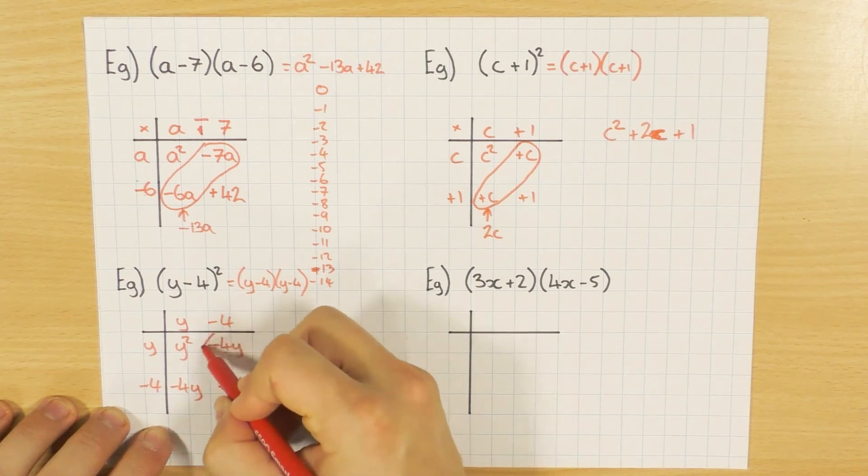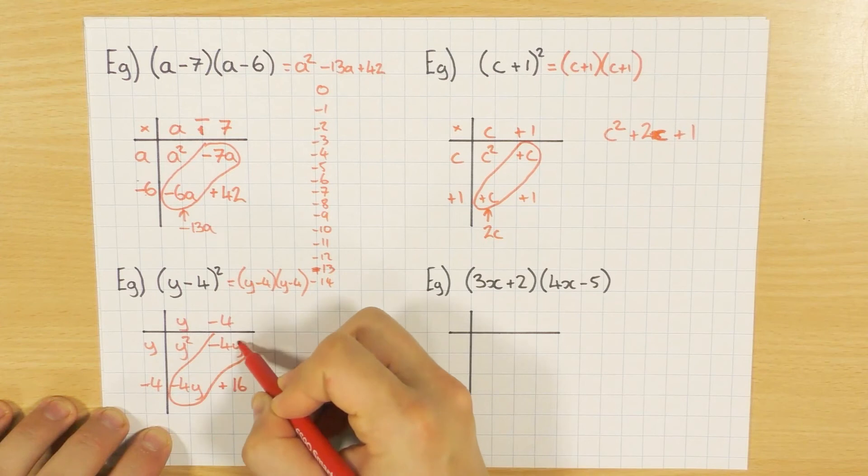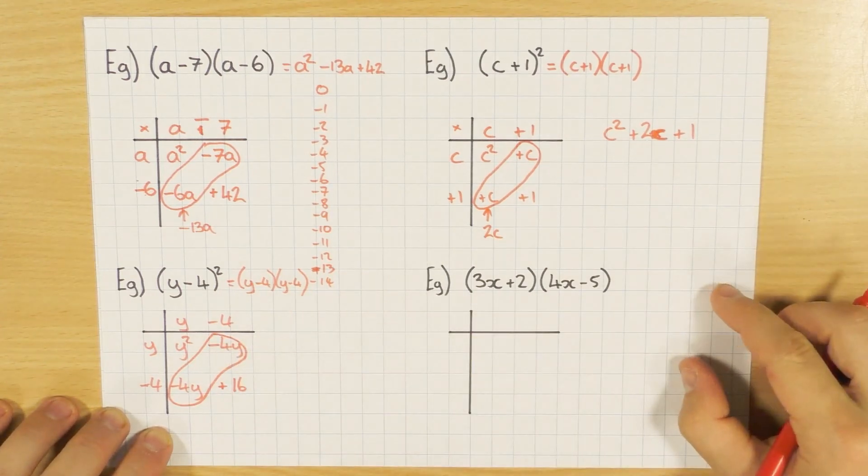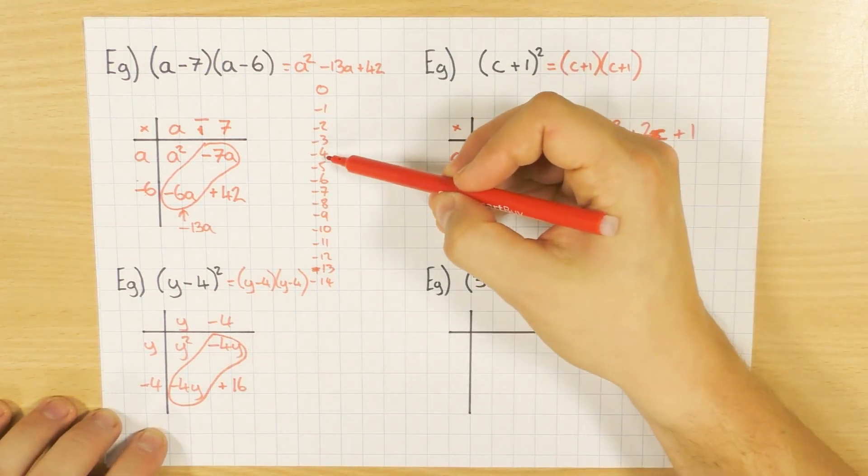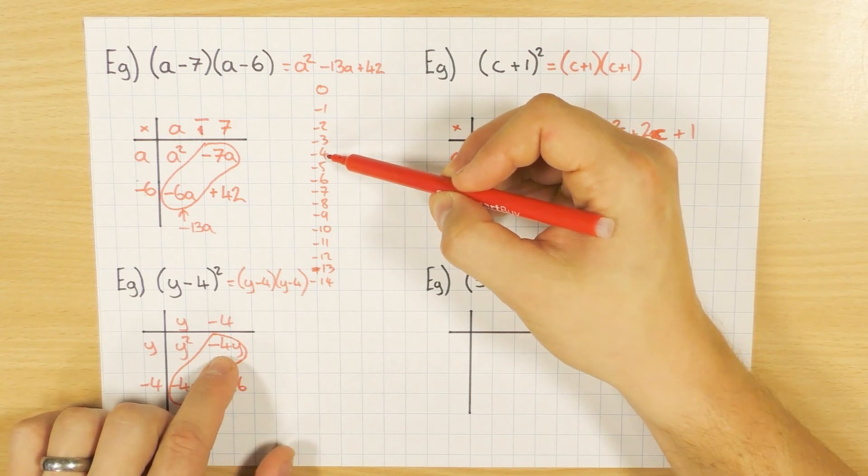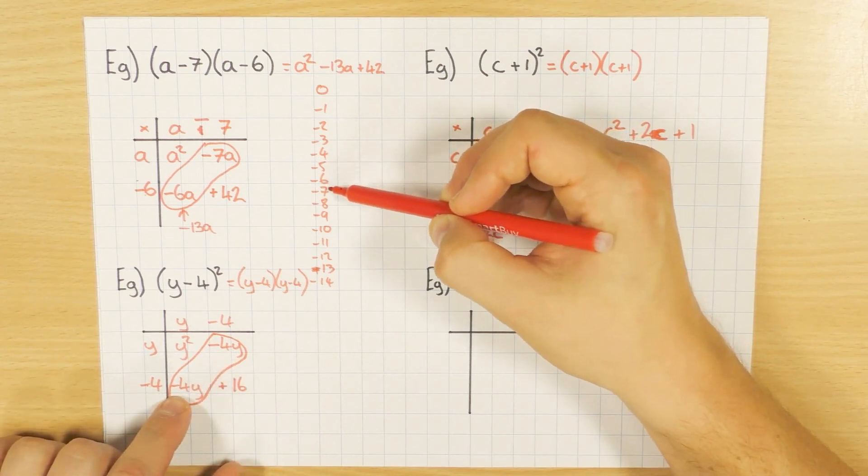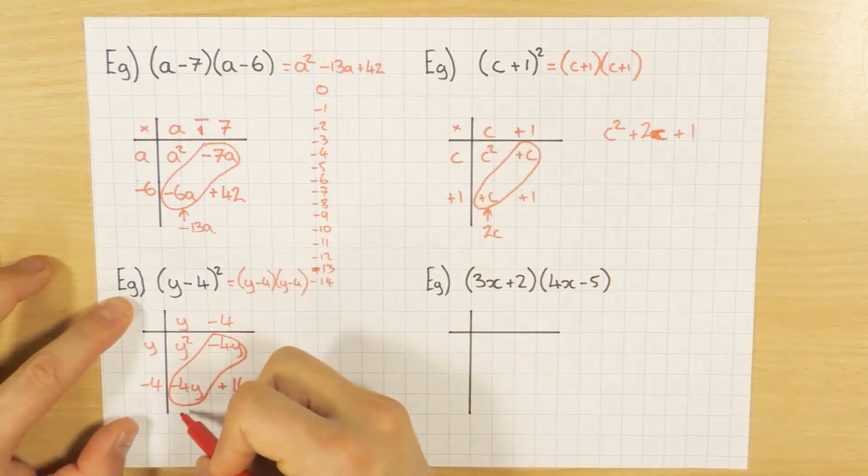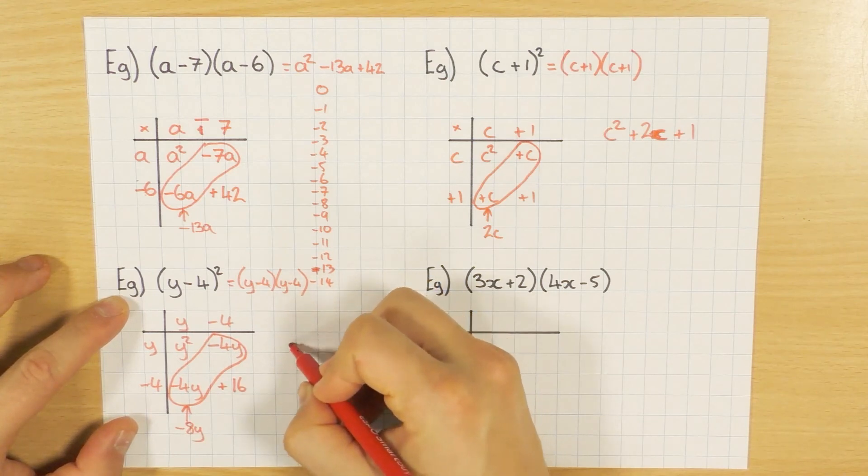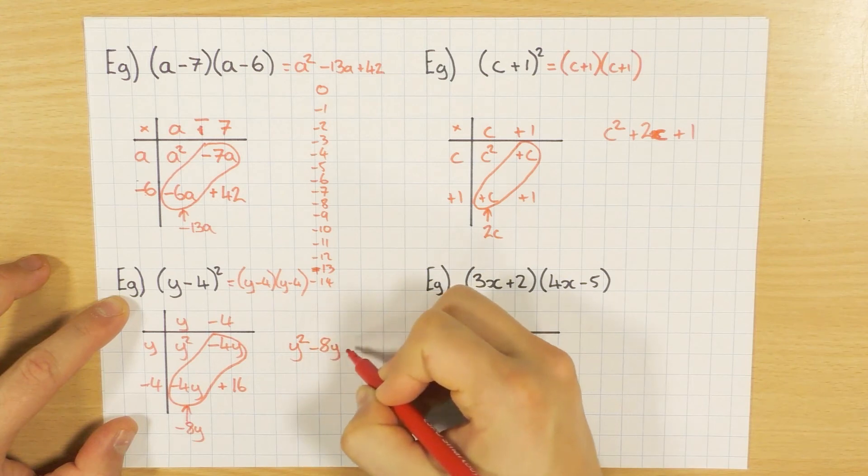And again we've got this double negative. They're both the same: minus times a minus is a plus. 4 times 4 is 16. And again I need to simplify this. There's some negatives, so again you can draw your number line. I've already got one, you can use it. So minus 4y, so I'm starting at minus 4, I'm taking away another 4: 1, 2, 3, 4. Minus 8. So minus 8y. And again you can write out your final answer: y squared minus 8y plus my 16.